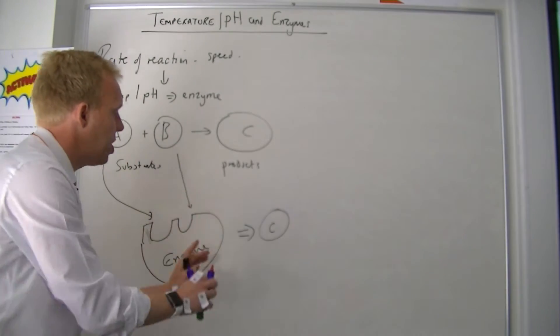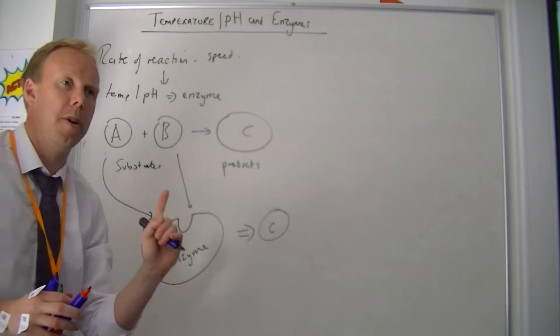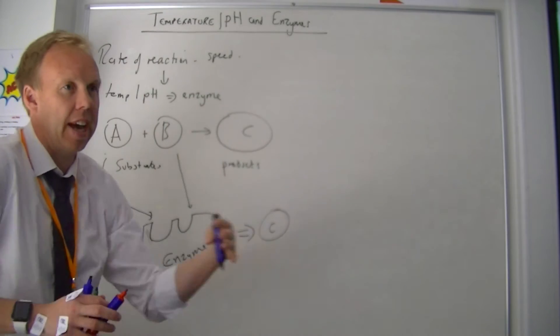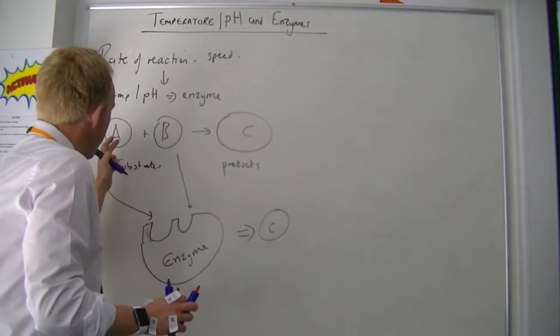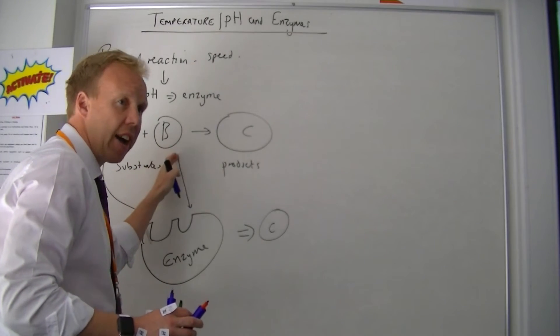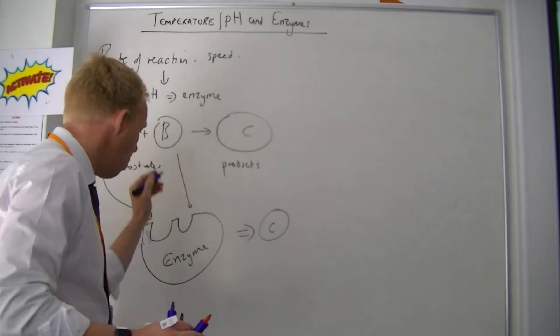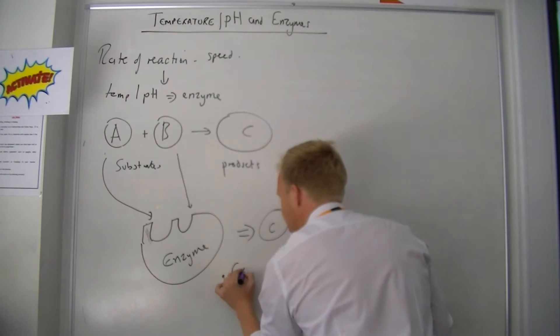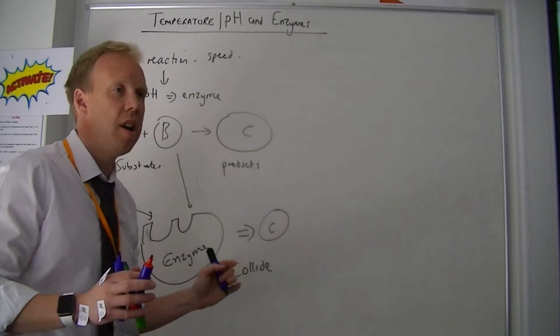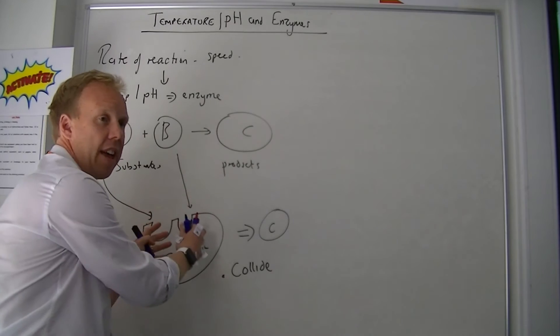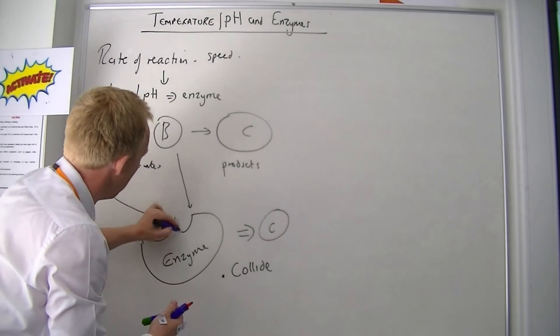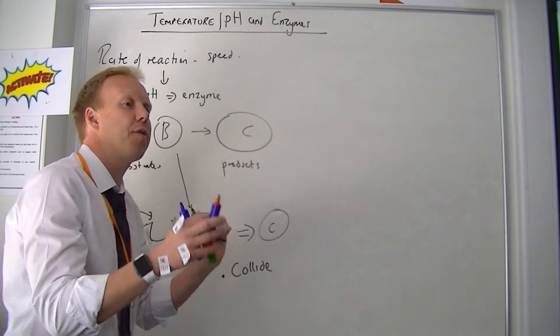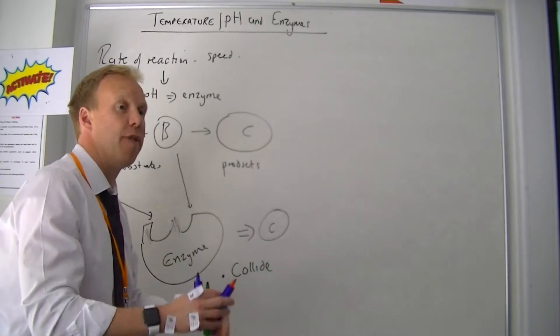Now this brings me to another point, and it's a chemistry thing called collision theory. For A and B to react, they have to do two things. One is collide - they have to actually hit each other, and that's where the enzyme helps because it brings them together. Not only do they have to collide, they have to collide with enough energy.